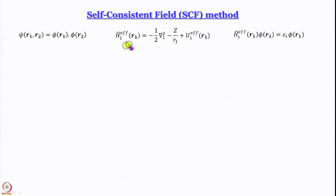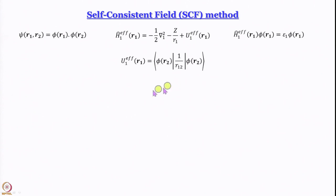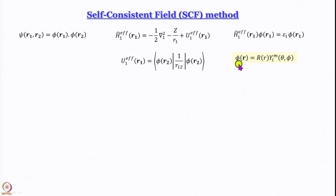We have the Hamiltonian operating on this wave function, and the first question we answer is: what is epsilon 1? Now let us think about the functional form of the r-dependent wave function. Remembering what we did for hydrogen atom wave functions, we can write it as a product of an r-dependent part and a theta-phi dependent part: capital R multiplied by Y.